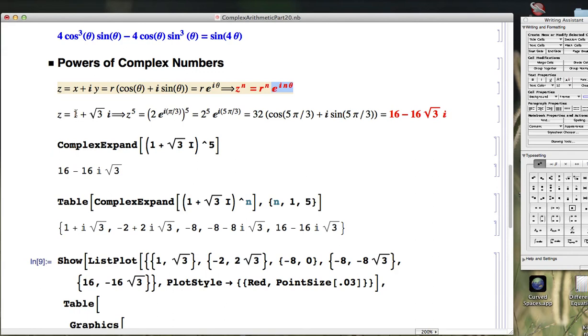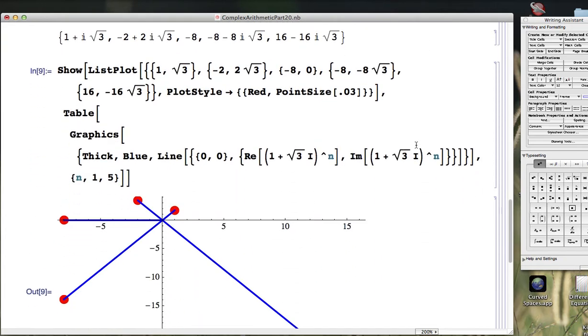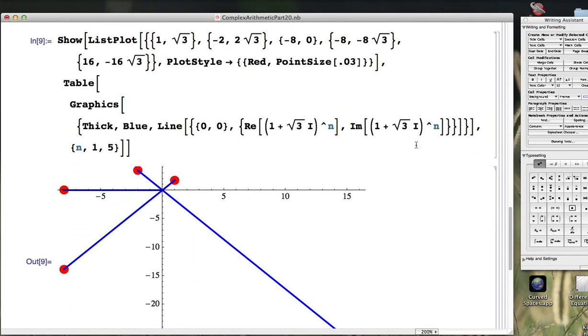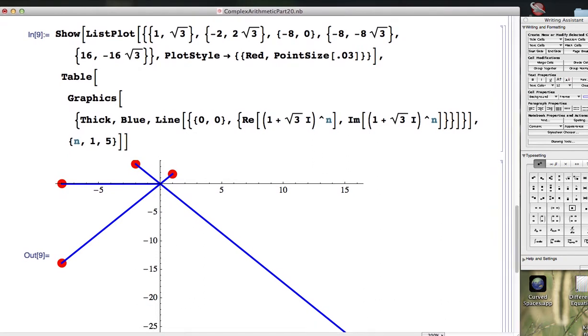We applied it to this example here. If z was 1 plus square root of 3i, we wrote that in polar form as 2e to the i pi over 3, raised that to the 5th power, and converted back to rectangular form and got this. Then we visualized it down here. Let me start in this video by modifying this visual a little bit to set us up for doing something else with it.